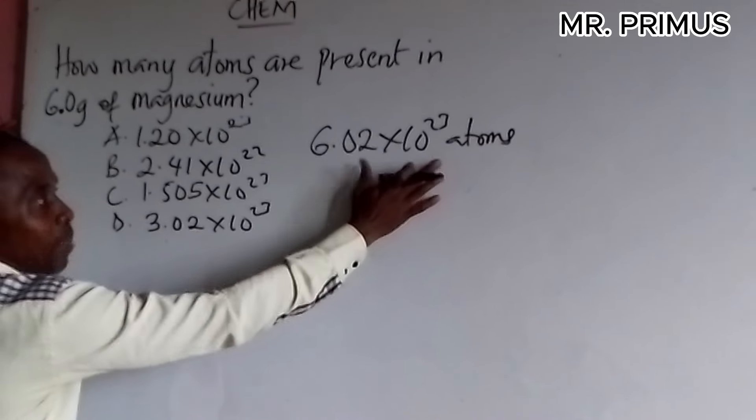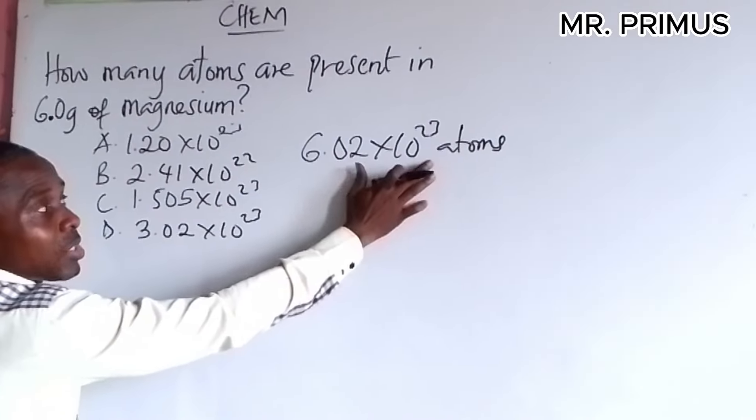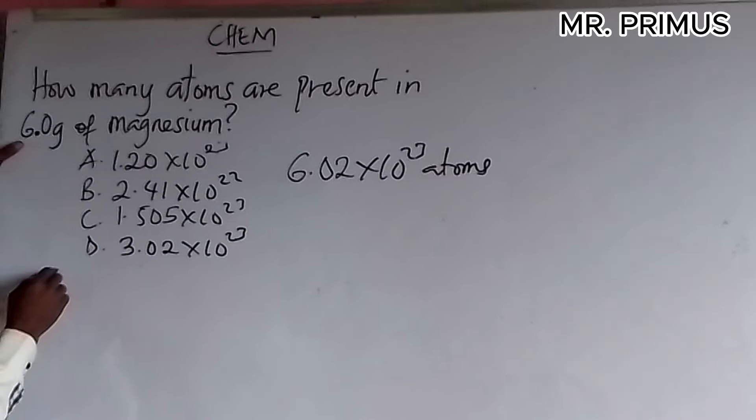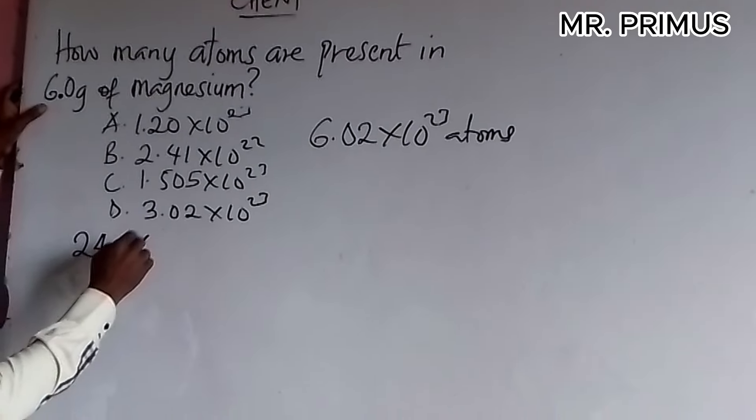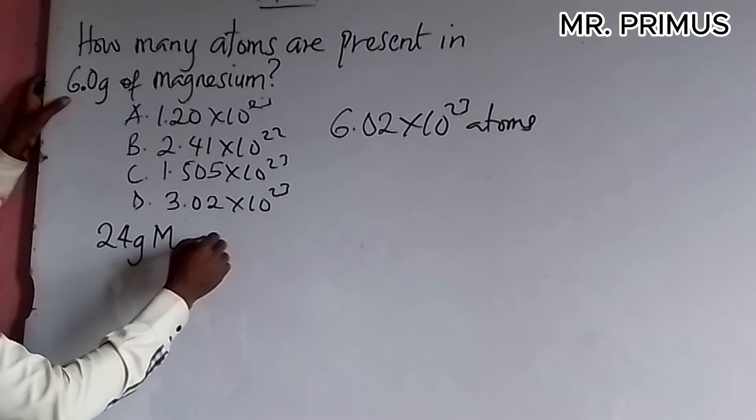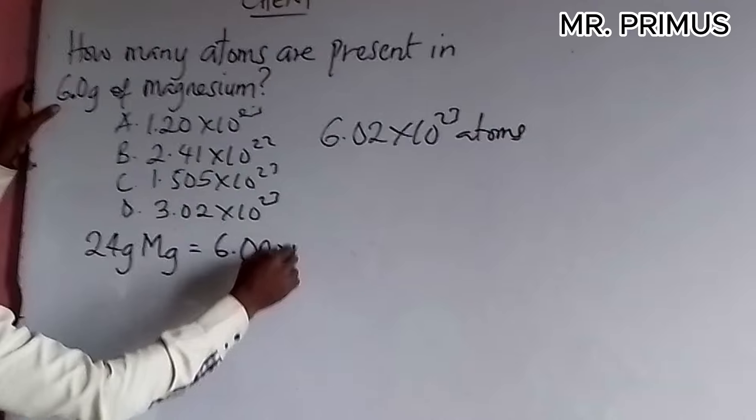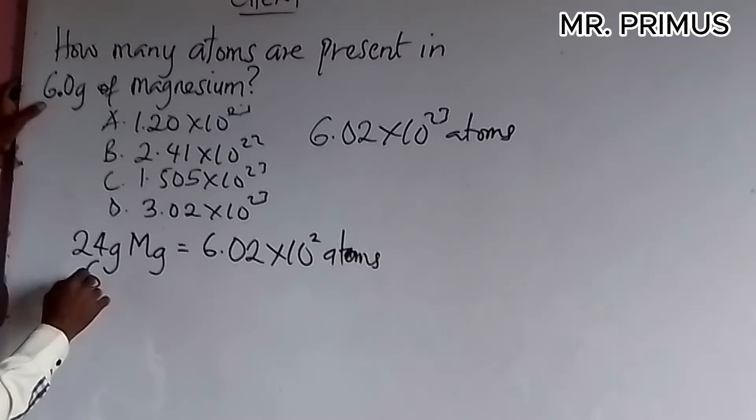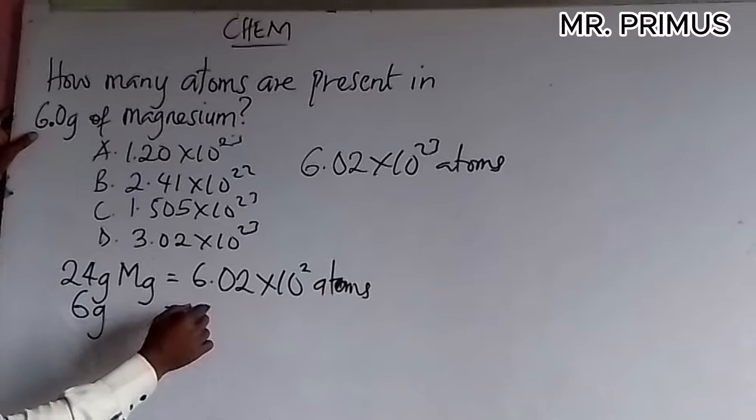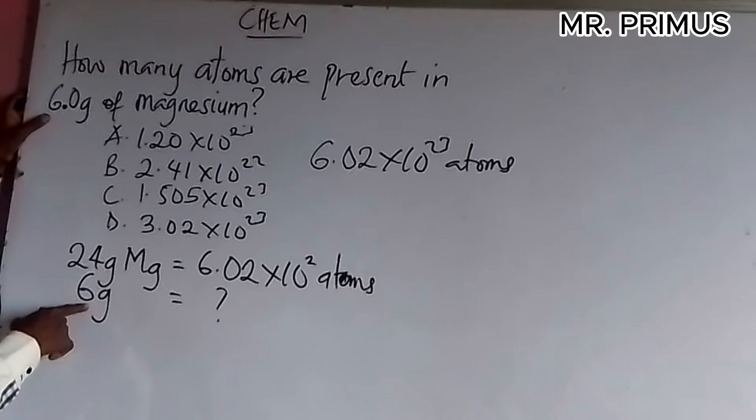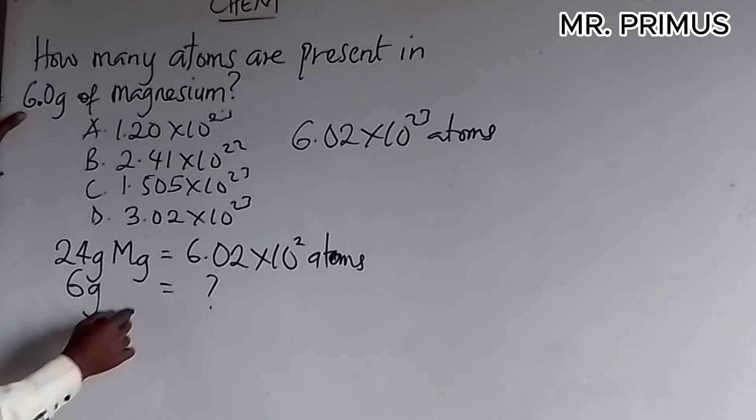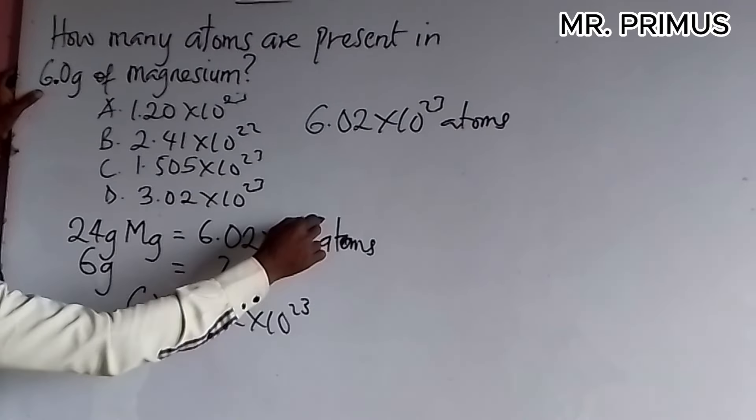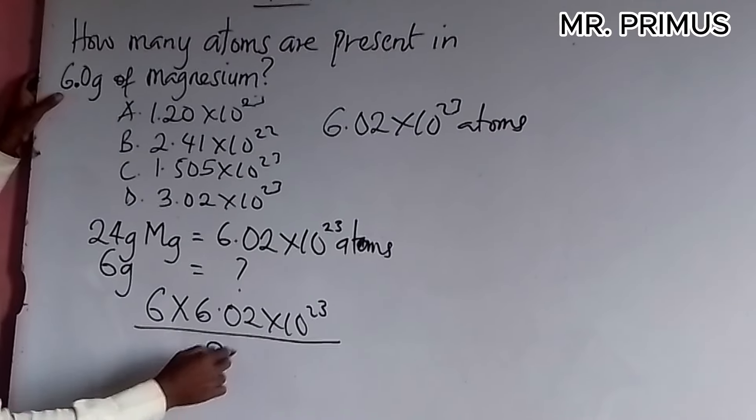For every relative atomic mass, it contains this number of atoms. But now, instead of giving us 24, we have 6. Now, generally, we start it like this: 24 grams of magnesium contains 6.02 times 10 raised to power 23 atoms. Right, 24 grams contains 6.02. Now, 6 grams of magnesium will contain how many? You see, 6 times 6.02 divided by 24.